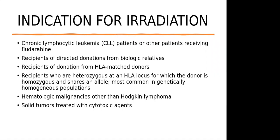Recipients who are heterozygous at an HLA locus for which the donor is homozygous — most common in genetically homogeneous populations — also need irradiated blood. Additionally, some hematology patients and solid tumor patients like breast cancer being treated with cytotoxic agents require irradiated blood products.